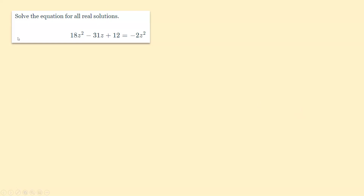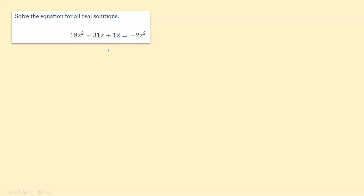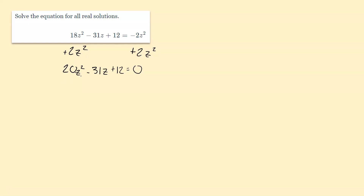Now we have 18z squared minus 31z plus 12 equals negative 2z. Notice the difference — this one is not already set equal to 0. One thing to note about the quadratic formula is you've got to make sure you have it set equal to 0 first. So we add 2z to the other side, giving us 20z squared minus 31z plus 12 equals 0. So a is 20, b is negative 31, and c is 12.